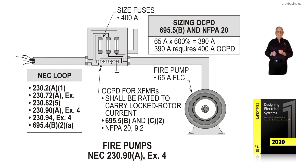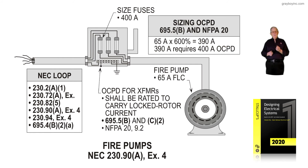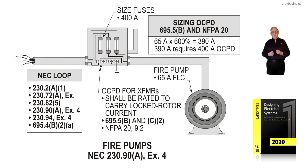Some states, counties, and cities prohibit a tap ahead of the main, so you really need to check that out. 230.98 exception number 4 allows sizing that overcurrent device to allow a fire pump to operate and bring water to a location until failure. 230.94 exception 4 further deals with this permissive rule for fire pumps. And 695.4B2A also states the overcurrent device must be sized to allow the fire pump to operate till failure.